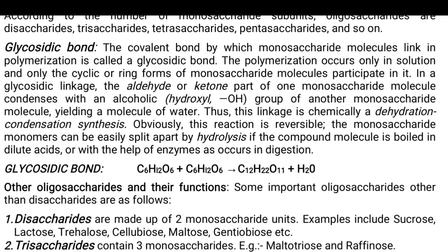The special bond which is present between the monomers of sugars is called a glycosidic bond. It is a covalent bond by which the monosaccharide molecules link together to form a polymer of sugars — that is called either the oligosaccharide or the polysaccharide.